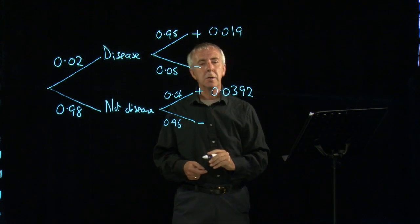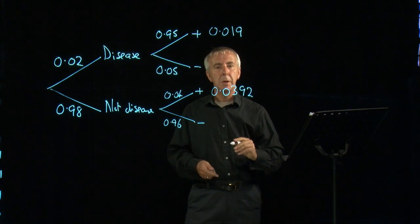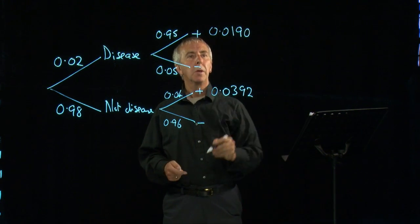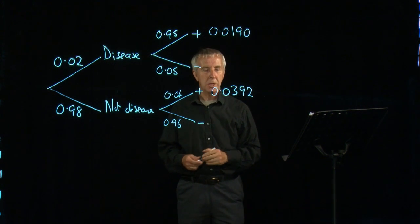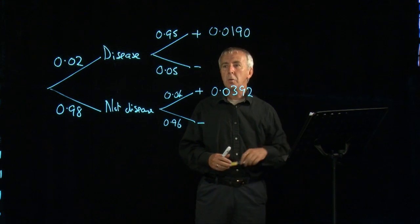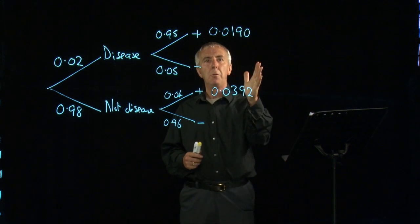And again, it's convenient to make the two numbers into the same number of decimal places. So that's four decimal places. We'll make this into four decimal places. So what does this tell us? Well, again, a good way of looking at this is to make these into whole numbers.